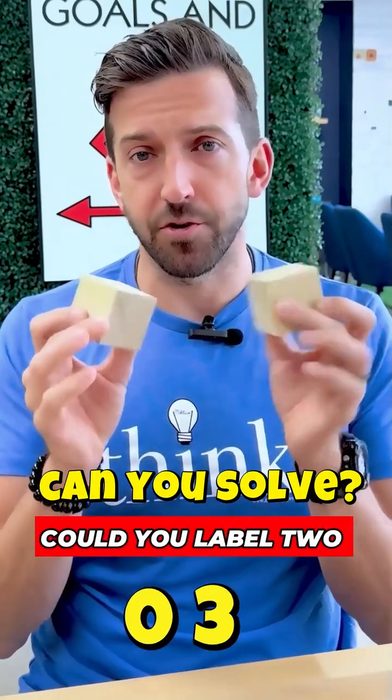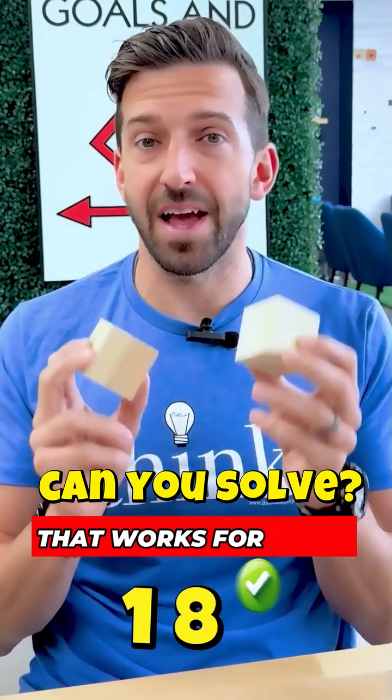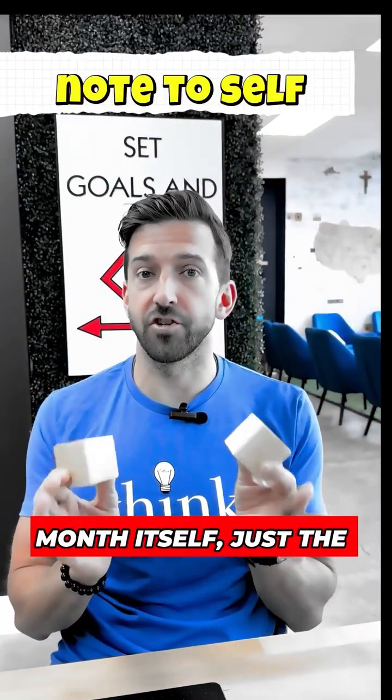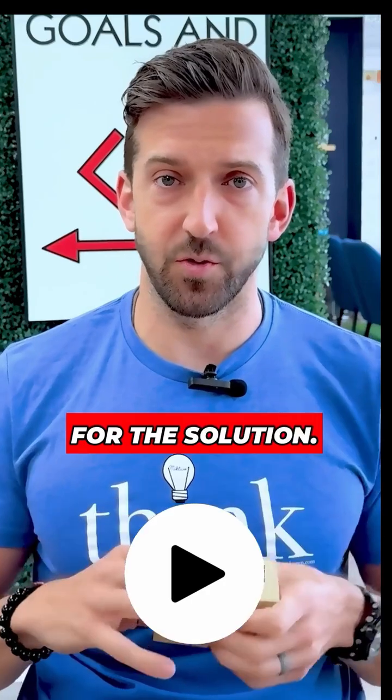The question is, how could you label two blocks and only two blocks to make a date calendar that works for every possible day of the month? Note, you don't need to worry about the month itself, just the day. Pause the video, see if you can figure this one out and then hit play when you're ready for the solution.